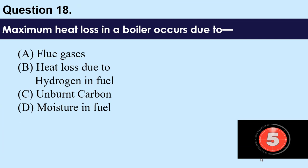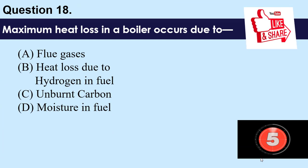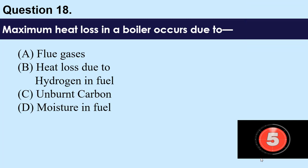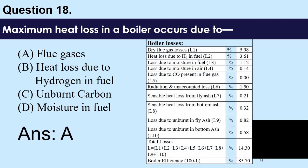Question number 18: Maximum heat loss in a boiler occurs due to — A) flue gases, B) heat loss due to hydrogen in fuel, C) unburned carbon, D) moisture in fuel. The answer is A — flue gases. In a 500 MW unit with boiler efficiency of 85.70%, dry flue gas losses are 5.98%, heat losses due to H2 in fuel are 3.61%. The maximum loss at 5.98% is dry flue gas losses.